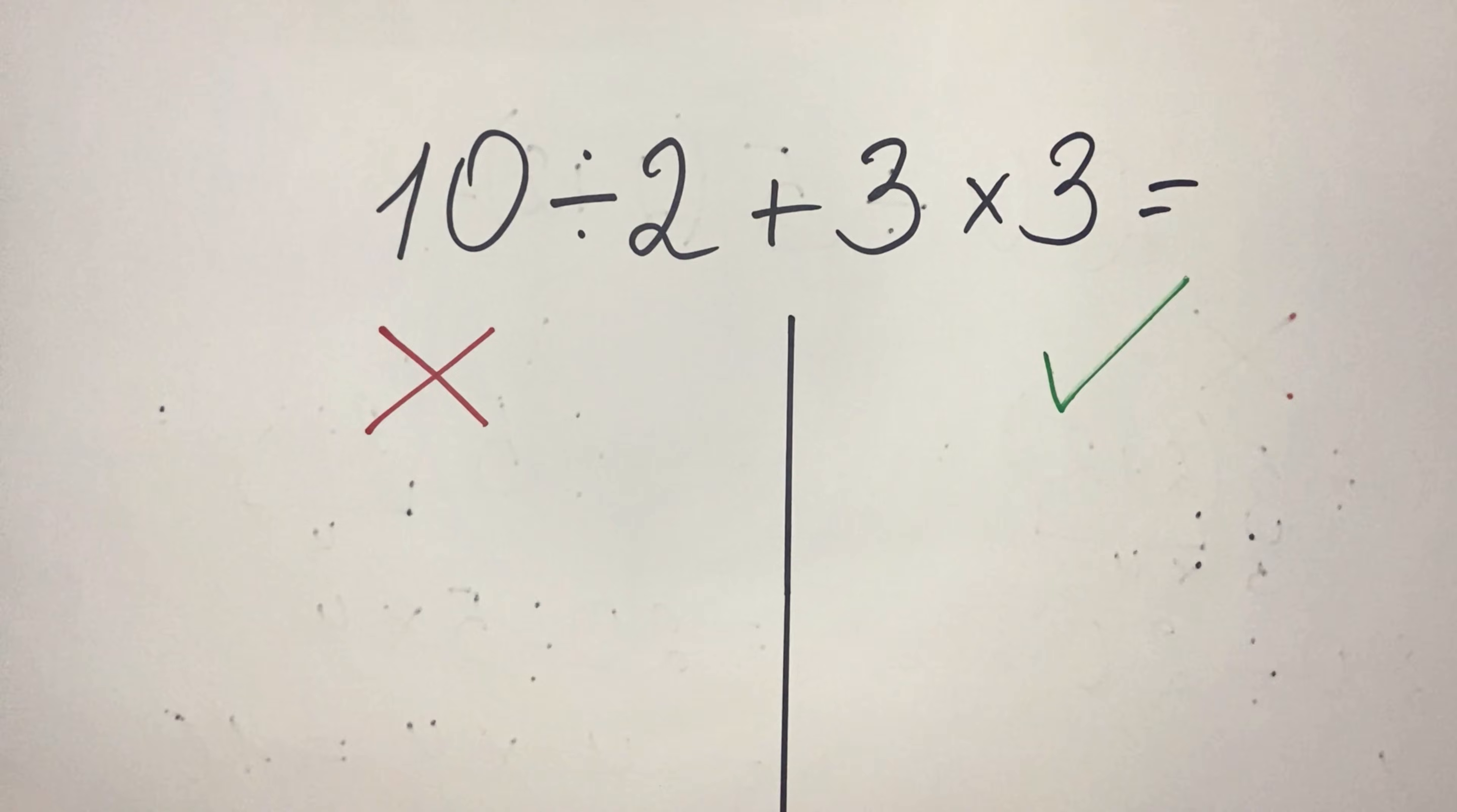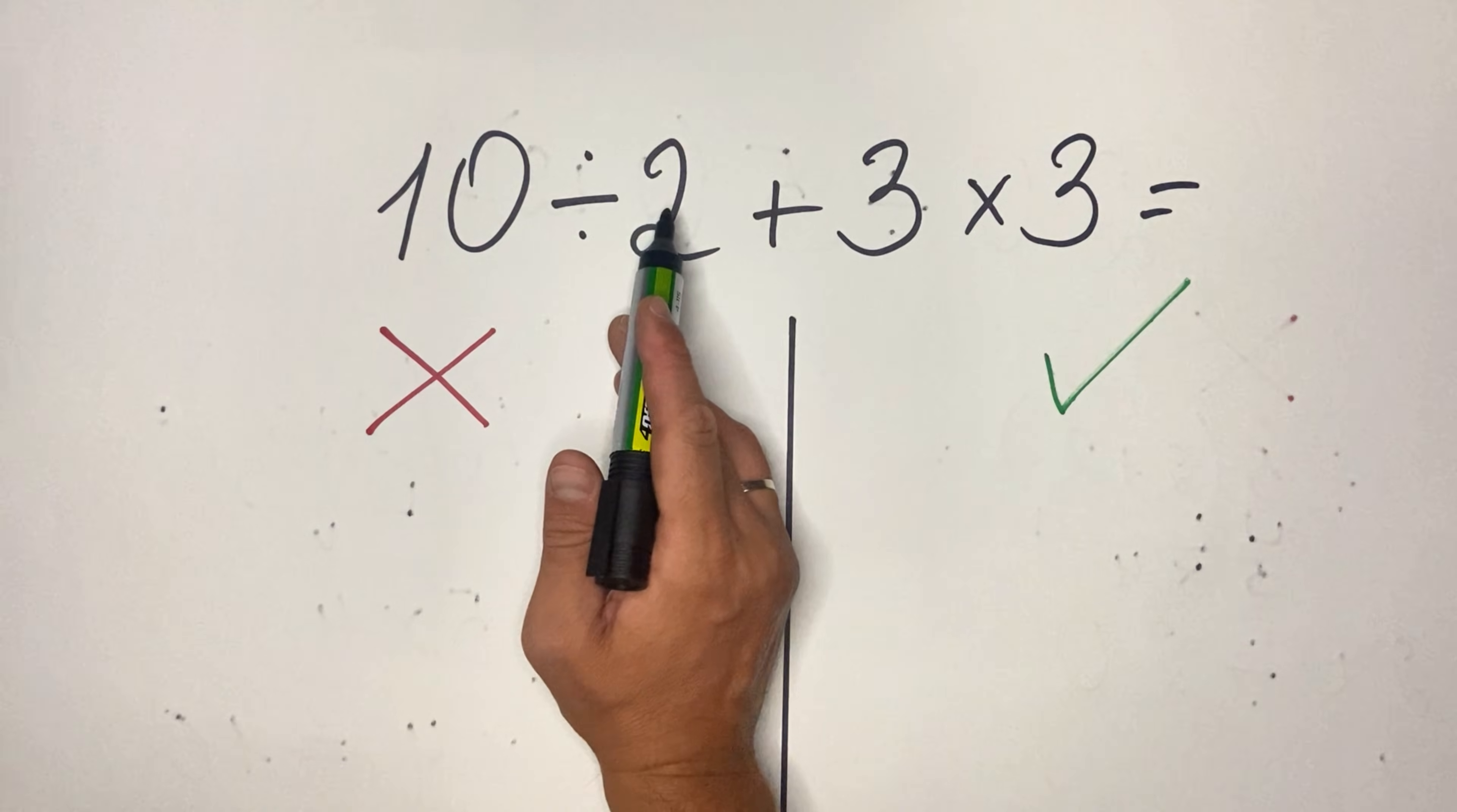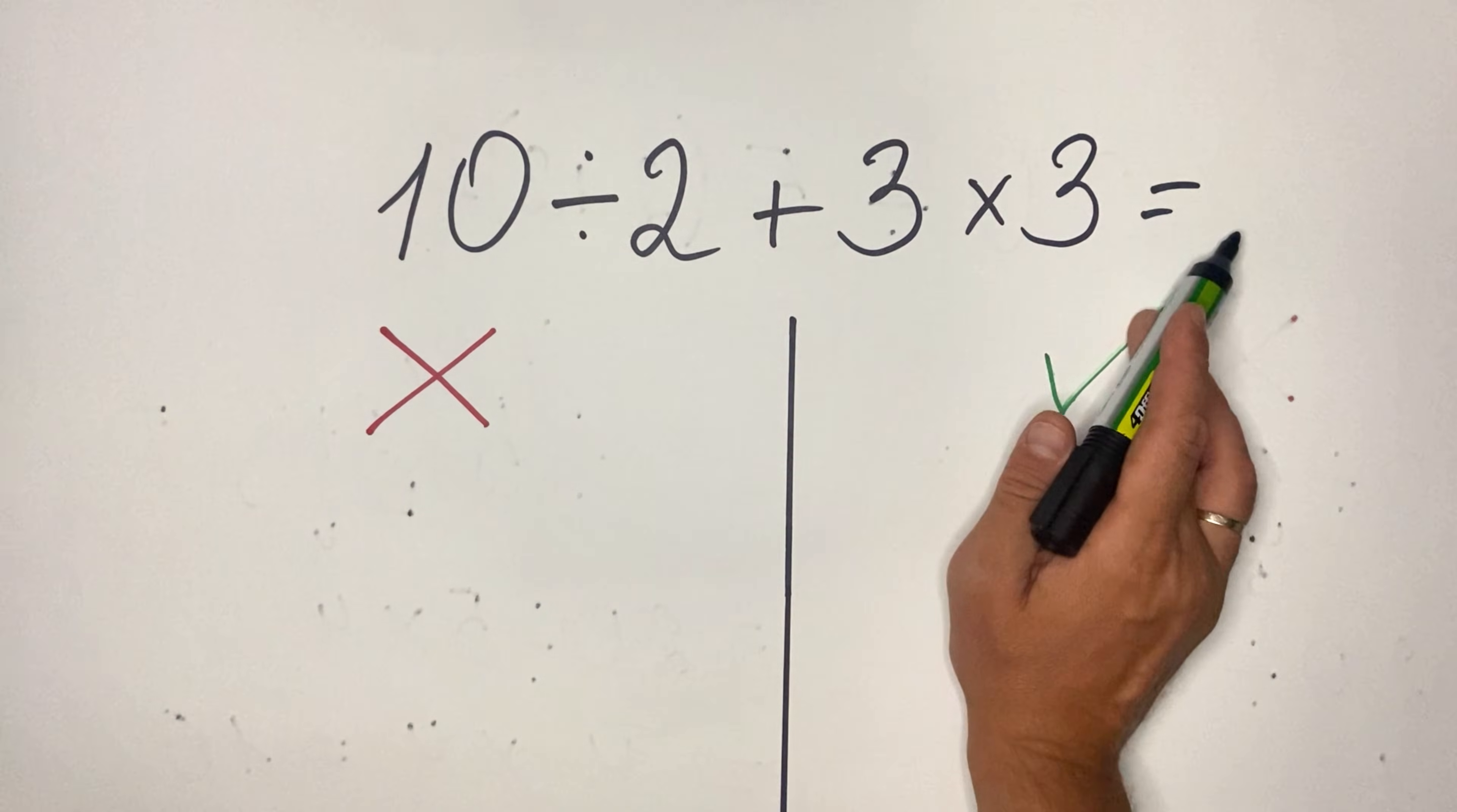What most people are getting wrong is they forget the PEMDAS rule. So what they do is they do 10 divided by 2 plus 3, then they multiply by 3.